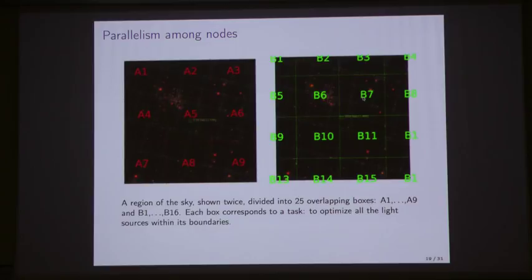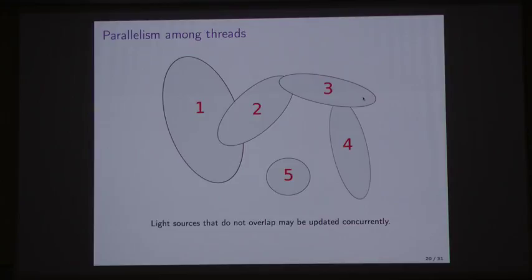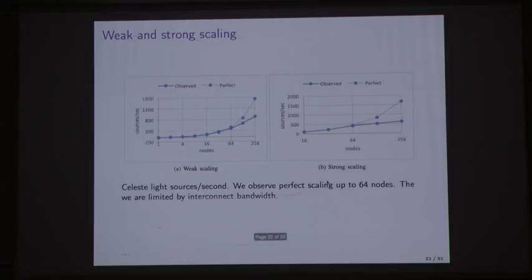Within a node, we also have issues of making sure the coordinate descent algorithm has convergence guarantees. We're not doing something like Hogwild because we're doing Newton's steps, so we really want to avoid updating overlapping sources simultaneously. Here we're showing five galaxies that might be processed by a single node. You wouldn't want to update one and two at the same time, but you could update one, three, and five simultaneously. That's the intuition about how we do multithreading within a node. There's a NIPS paper this year that has a more rigorous treatment of this approach, with theorems based on forming a conflict graph about what can be updated simultaneously while still getting the same result as serial execution.